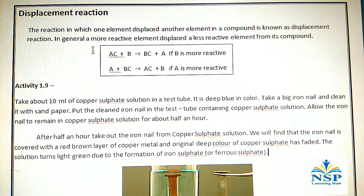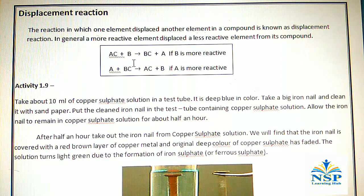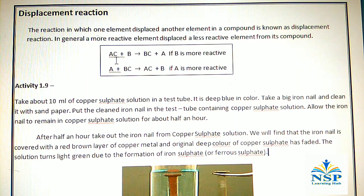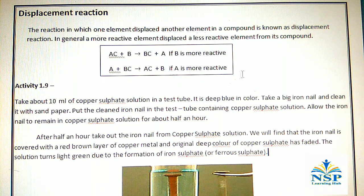In general, a more reactive element displaces a less reactive element from its compound. For example, when A reacts with BC, it gives AC plus B, if A is more reactive than B. Here, A displaces B from BC and forms AC.